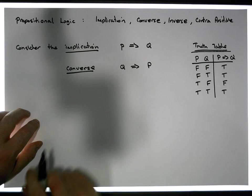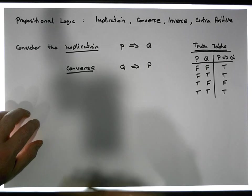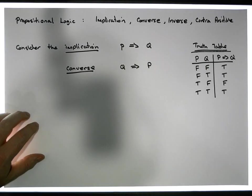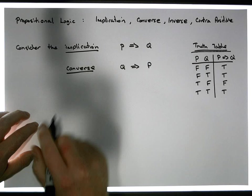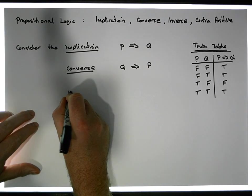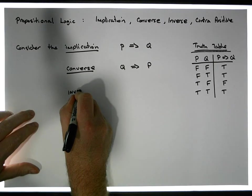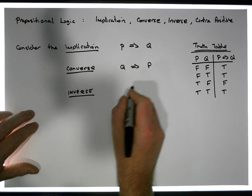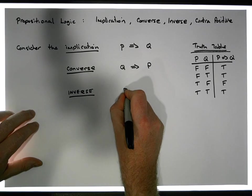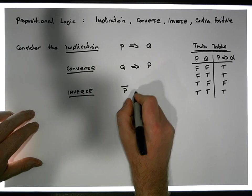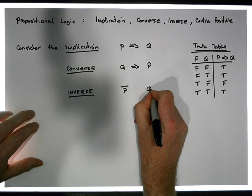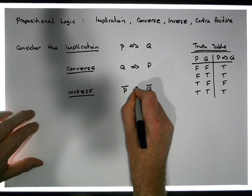Another thing we could do is invert both the premise and the conclusion. This is what's known as the inverse of the original argument. The inverse is where we take the original premise, negate it, and take the original conclusion, negate it, and connect them with an implication: not-P implies not-Q.